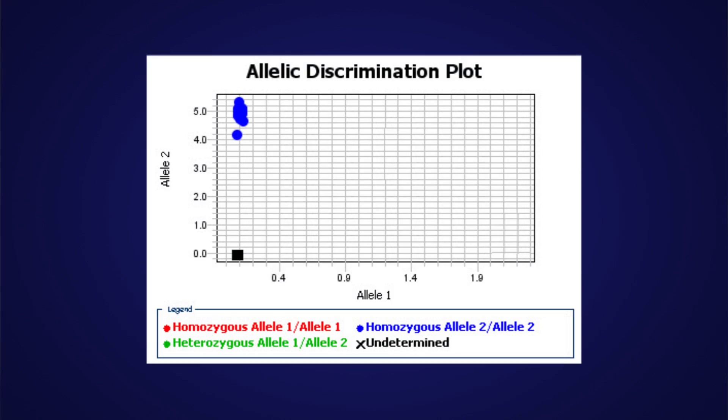The assays are combined with master mix and 1 to 20 nanograms of purified genomic DNA and then amplified. Data can be collected in real time or offline, and the analysis is taken from the endpoint read of the fluorescence. The sample will either be homozygous for allele 2, which means we will see mostly FAM dye; homozygous for allele 1, which means we will see mostly VIC dye; or heterozygous, which means there will be about equal contribution of signal from each dye.